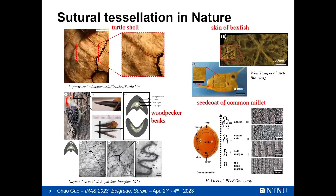My favorite structure in nature is called suture tessellation. 'Suture' means a softer interfacial layer articulating two building blocks — as defined in biological science. 'Tessellation' refers to how geometries are arranged in 2D or 3D space. These kinds of patterns are quite widespread in nature: we observe suture tessellations in turtle shells, the skin of the boxfish with its zigzag patterns, and similar patterns in woodpecker beaks.